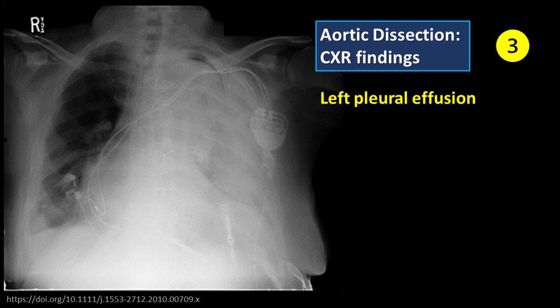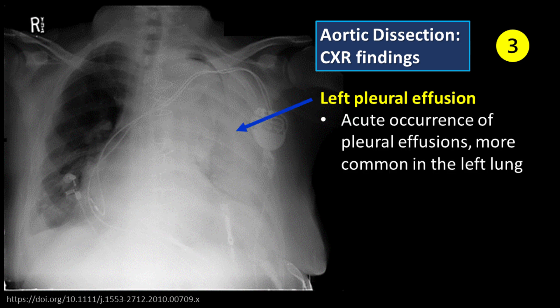Feature number 3: Left pleural effusion. Aortic dissection may lead to acute occurrence of pleural effusions, more commonly in the left lung.